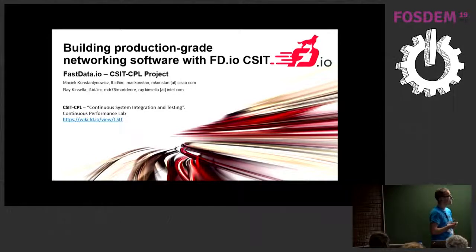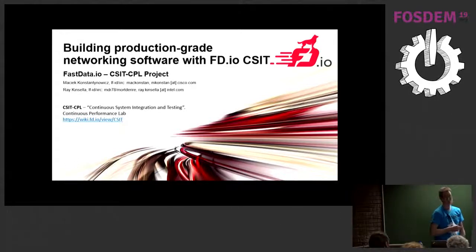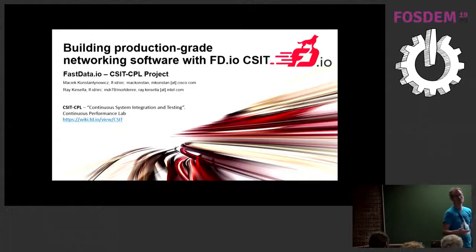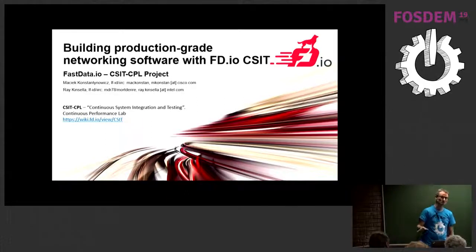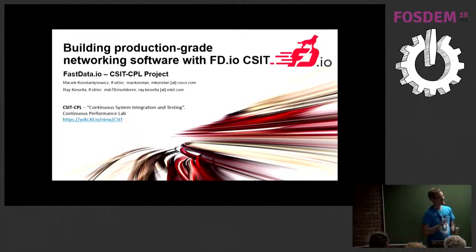FD.io is a collection of projects — really three key things. FD.io is VPP, which you heard about earlier. VPP is a high-performance network stack built with the same kind of optimizations as DPDK. DPDK is a very efficient layer for IO, and FD.io VPP is a series of protocol implementations on top of DPDK. That's one part of FD.io. A second part is the integrations it gives you.